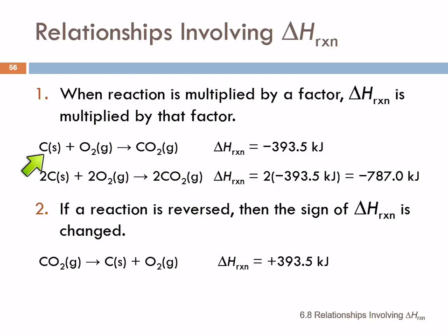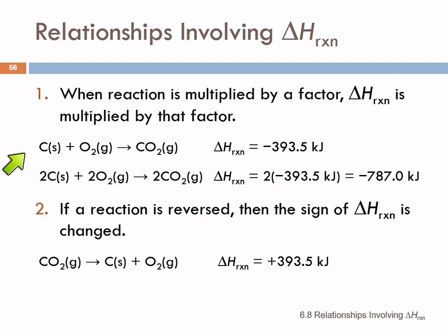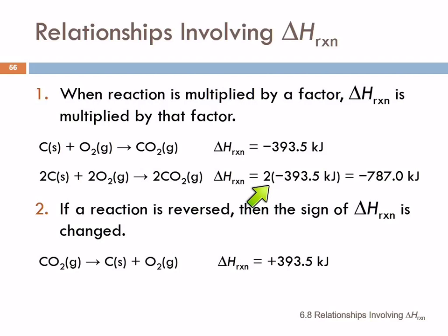Here's an equation: carbon plus oxygen to form carbon dioxide. And the heat of reaction for that is minus 393.5 kilojoules. That means 393.5 kilojoules are released for every one mole of carbon that is burned. Well, if we double the reaction — if we change the coefficients on the balanced chemical equation and put twos in front of everything — we've now doubled it. So if we're talking about 2 moles of carbon burning, it's reasonable that the amount of energy released is twice that.